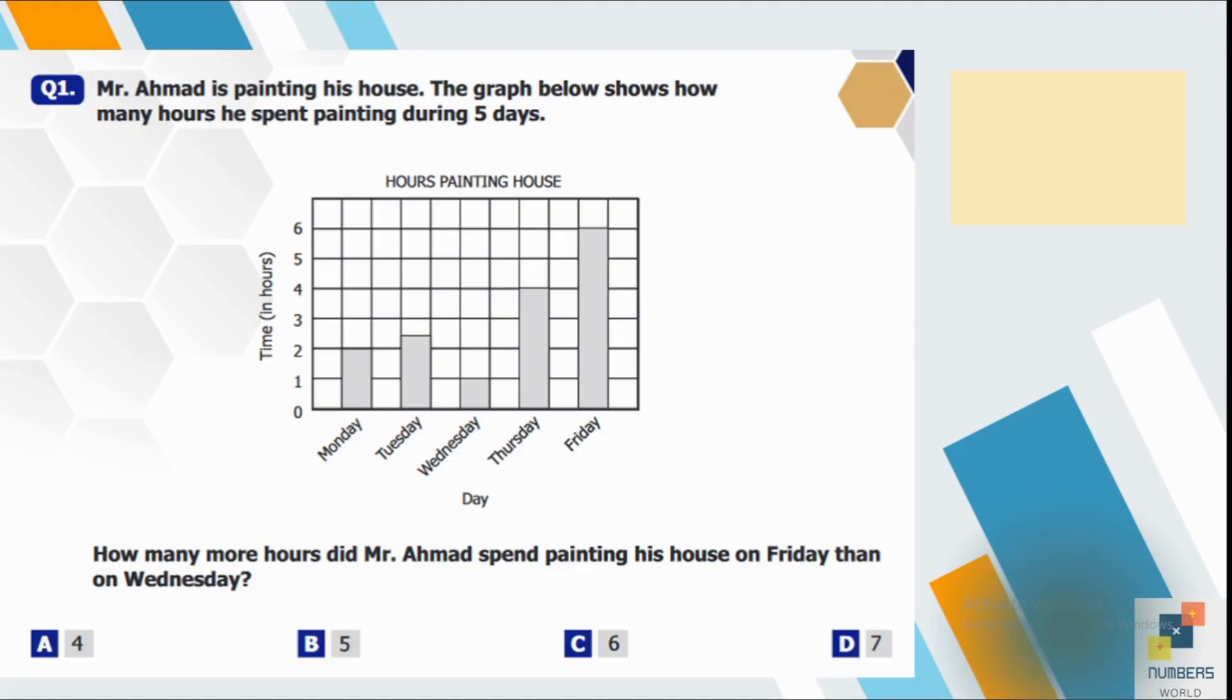Question number 1. Mr. Ahmed is painting his house. The graph below shows how many hours he spent painting during five days. How many more hours did Mr. Ahmed spend painting his house on Friday than on Wednesday? So here it's a question of comparison in which we have to compare the number of hours painted on Friday than on Wednesday.